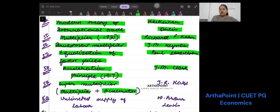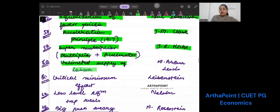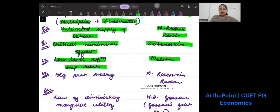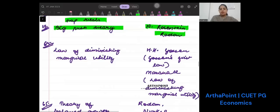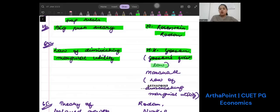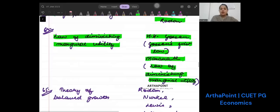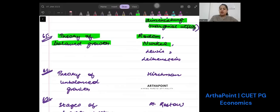Super multiplier concept, which is multiplier plus accelerator, was given by J.R. Hicks. Unlimited supply of labor was given by Arthur Lewis. Critical minimum effort was given by Leibenstein. Low-level equilibrium trap thesis was given by Nelson. Big push theory was given by Rosenstein-Rodan. Law of diminishing marginal utility was given by Gossen - it's called Gossen's First Law - and then Marshall, which named it as law of diminishing marginal utility. Theory of balanced growth is Rodan, Nurkse, Lewis, and Leibenstein. Theory of unbalanced growth is Hirschman.